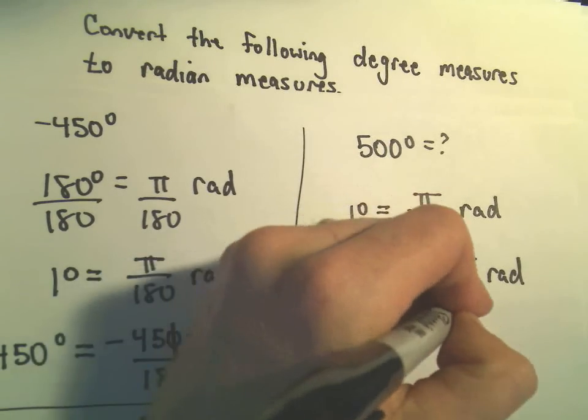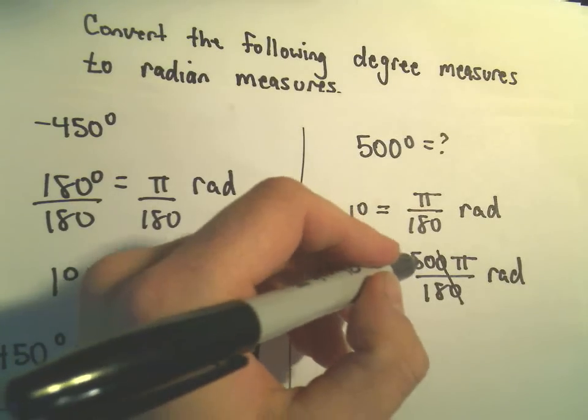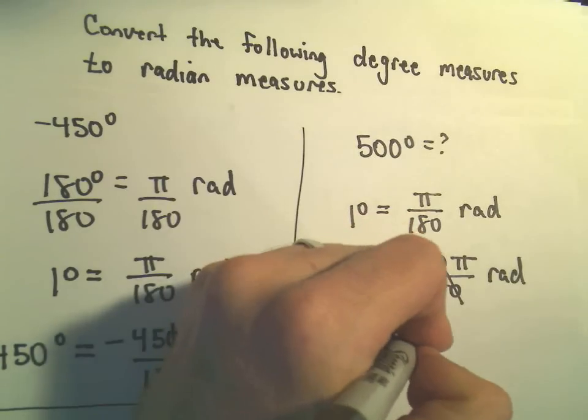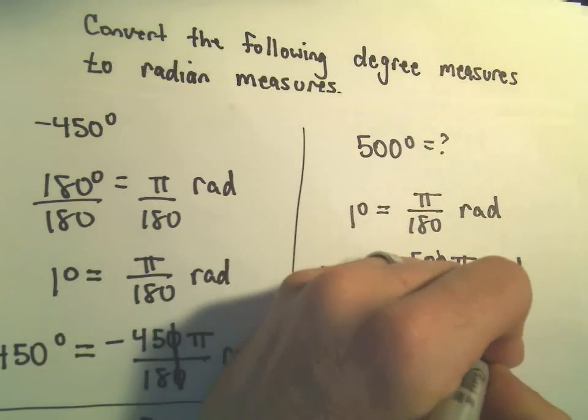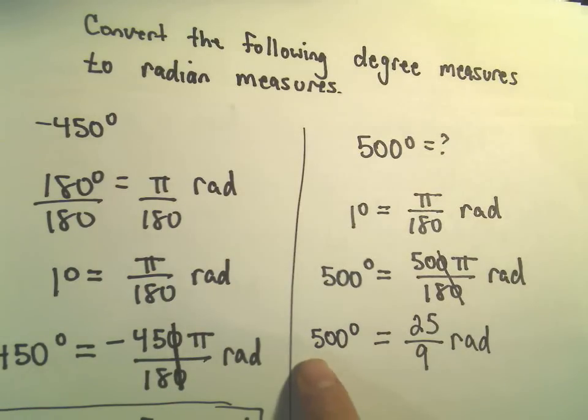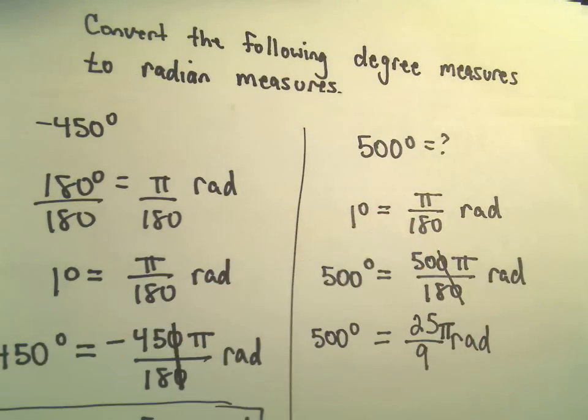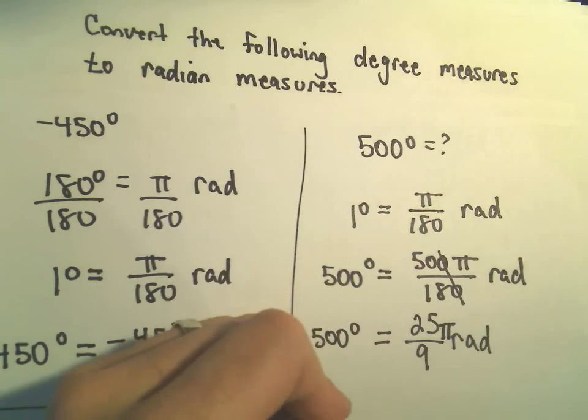Let's see, we can cancel out the zeros. The biggest number, I believe, that will go into both 50 and 18 is simply going to be 2. So 50 divided by 2 is 25. 18 divided by 2 is 9. So it looks like we're getting 500 degrees is equivalent to 25 over 9. I lost my pi there for a second. 25 over 9 pi radians. So let's rewrite that one more time.